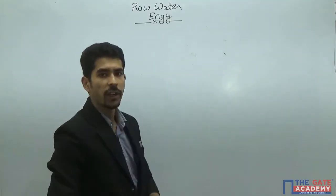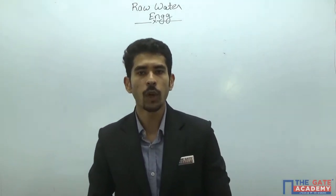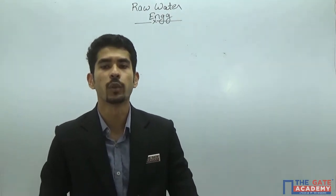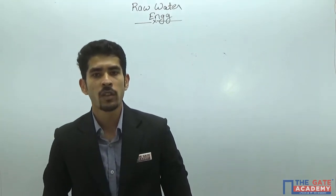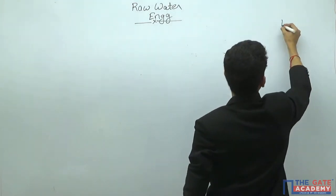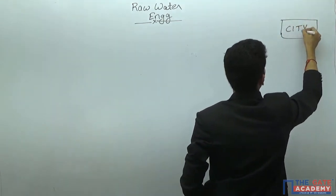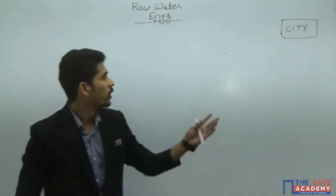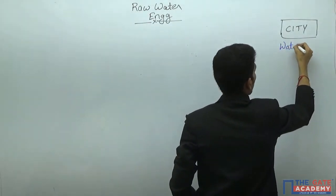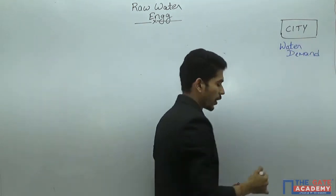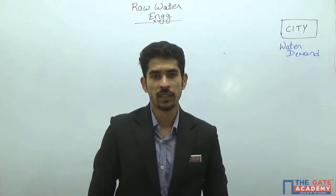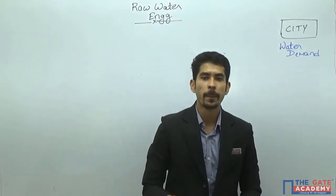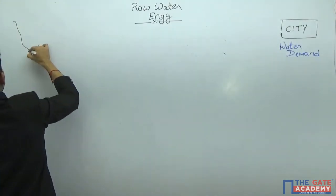I will be discussing the raw water engineering scheme and its layout in detail. First, what is raw water? Raw water is that water on which any further treatment can be carried out. Raw water is available in any kind of source — it can be a surface source or a subsurface source. Let us take an example: we have a city with a water demand, and to supply water to this city, the very first thing I have to do is find a source.